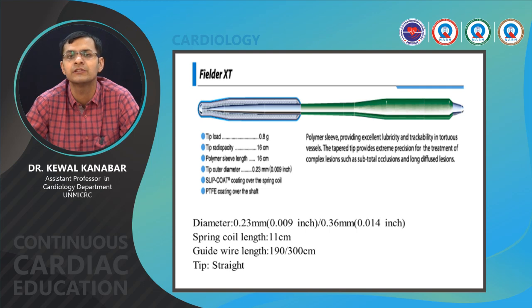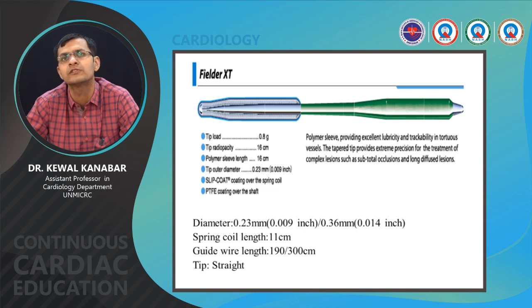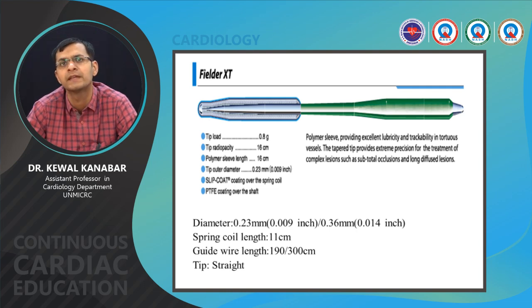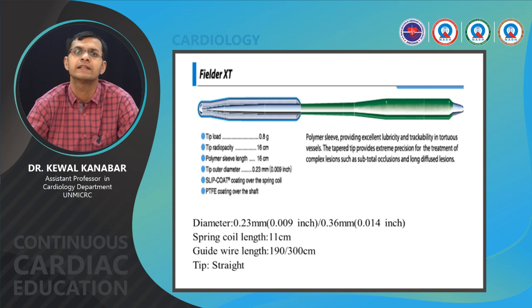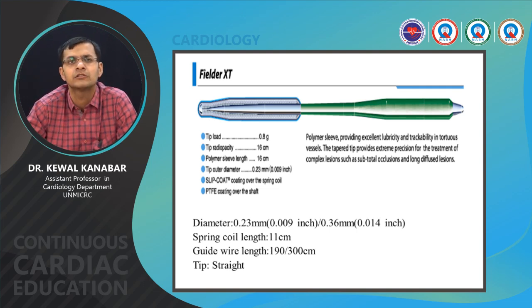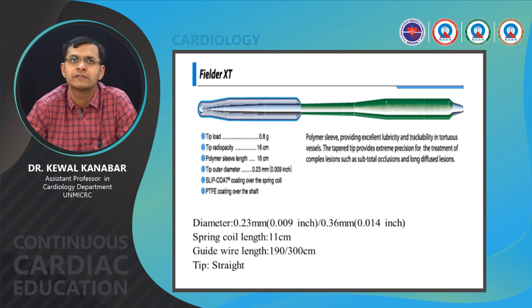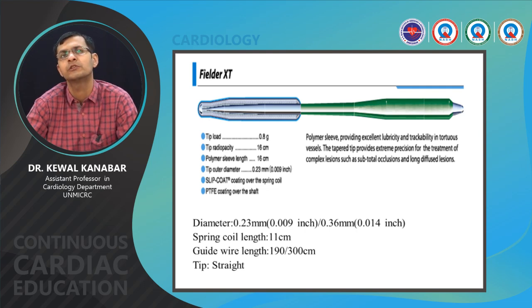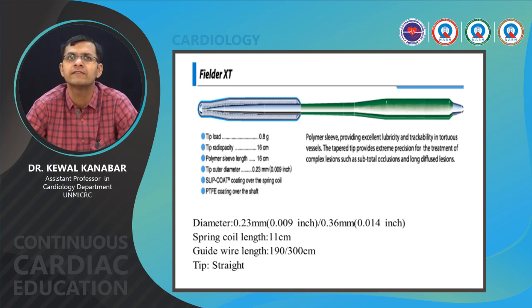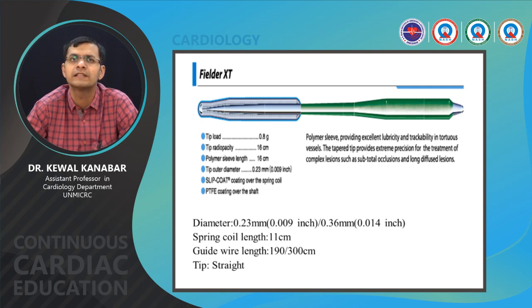The Fielder XT wire is extremely useful for CTOs, long diffuse lesions, and subtotals. It has a polymer sleeve with excellent lubricity and trackability. The tapered tip provides extreme precision for complex lesions. It has a very long radiopaque tip of 16 centimeters, polymer sleeve length of 16 centimeters, 0.014 diameter, spring coil length of 11 cm, guide wire length of 190 cm, and comes as a straight tip. A primary or secondary curve must be given when doing a CTO. It is considered one of the first wires for patients with micro channels during CTO.